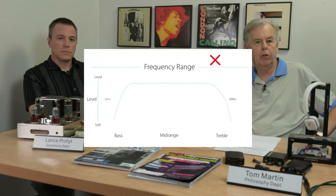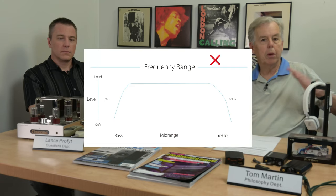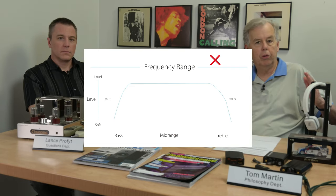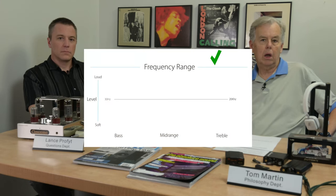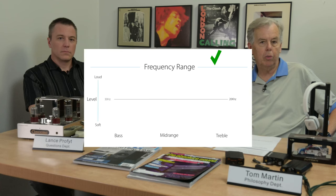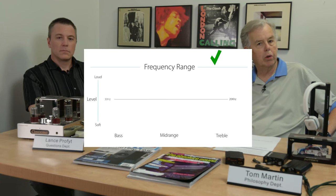And then we talked about frequency response in terms of range. We want to be able to reproduce low frequencies and high frequencies and cover approximately the full range of human hearing, which is classically considered to be 20 hertz in the bass to 20,000 hertz in the treble.